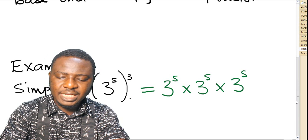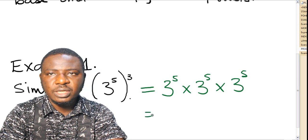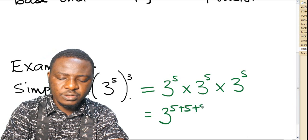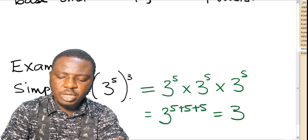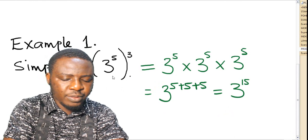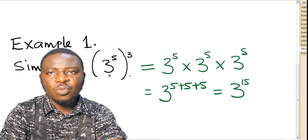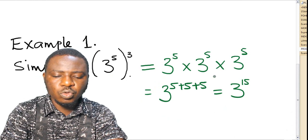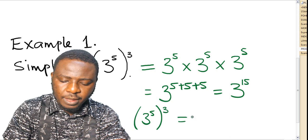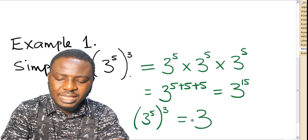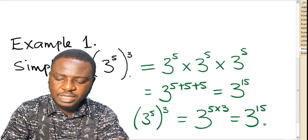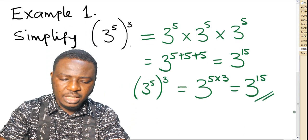And if you apply the additive law, which we did at the previous class, you agree with me that this will be equal to 3 raised to the power of 5 plus 5 plus 5, which is equal to 3 raised to the power of 15. But the product law says: keep the base and multiply the powers, which is still equivalent to breaking it down into the additive law. So, 3 raised to the power of 5, all cubed, equals 3 raised to the power of 5 times 3, which is 3 raised to the power of 15. This is what we refer to as the product law.